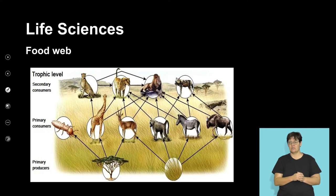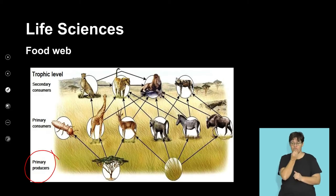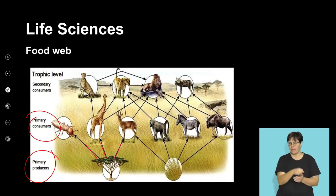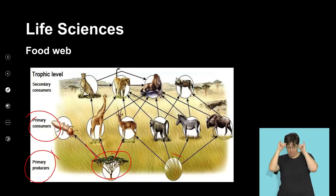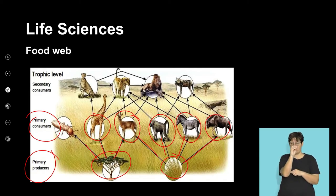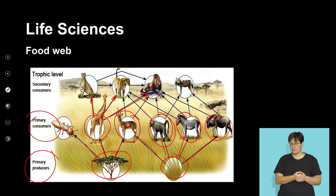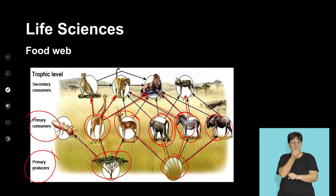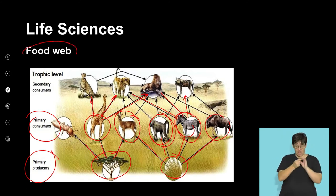A classic example is a food web in the grasslands, where primary producers such as grasses and trees are consumed by a whole variety of primary consumers — herbivores and omnivores. For example, a giraffe as a primary consumer may be consumed by leopard, cheetah, or lion. Zebras also have multiple consumers that feed off them. In this complex arrangement, many different food chains are connected — that is what we refer to as a food web.